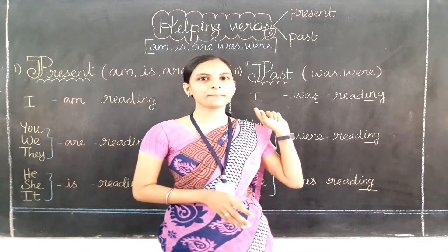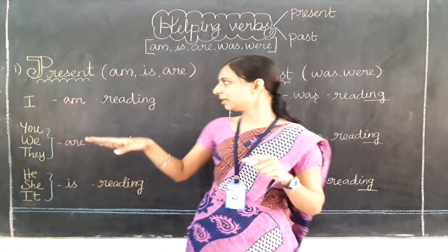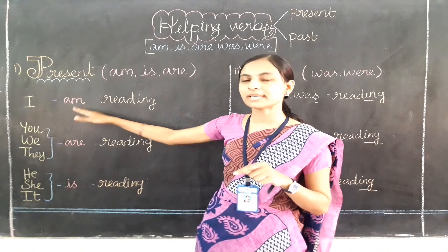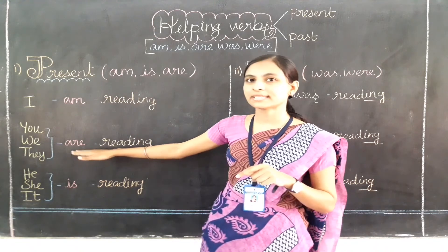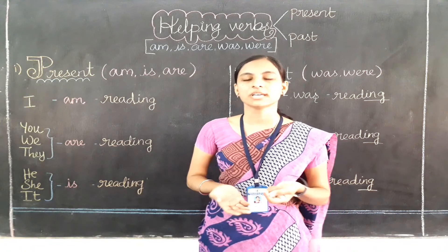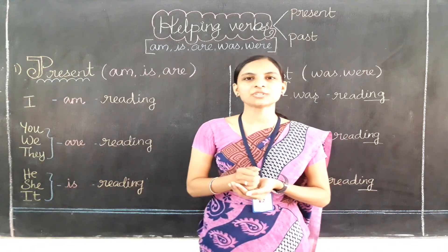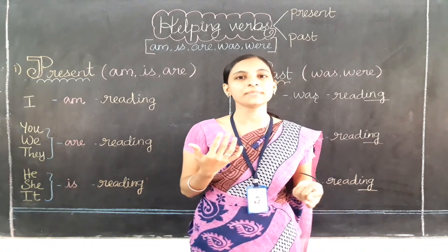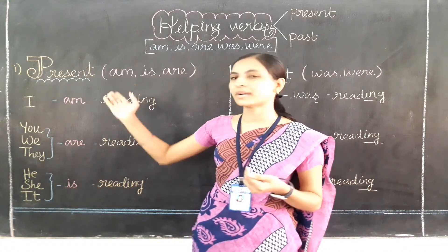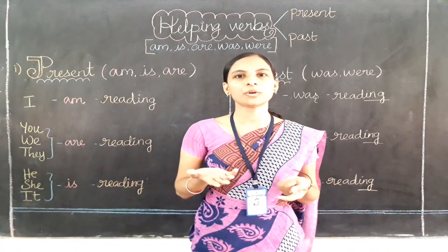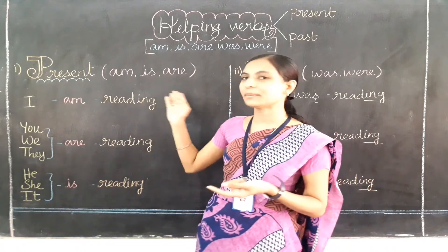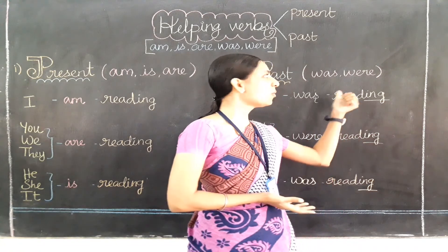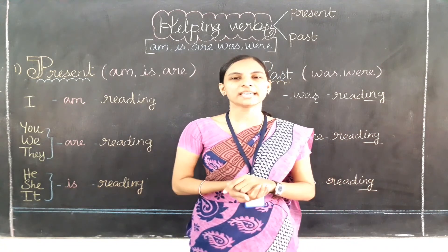Wherever you use 'am', 'are', 'is', that is present tense. For 'am', the past tense is 'was'. For 'are', the past tense is 'were'. For 'is', the past tense is also 'was'. I will see you in the next video with an exercise to find which is present time and which is past time. If you are talking about the present, use am, is, are. For the past, use was and were. Thank you so much, children.